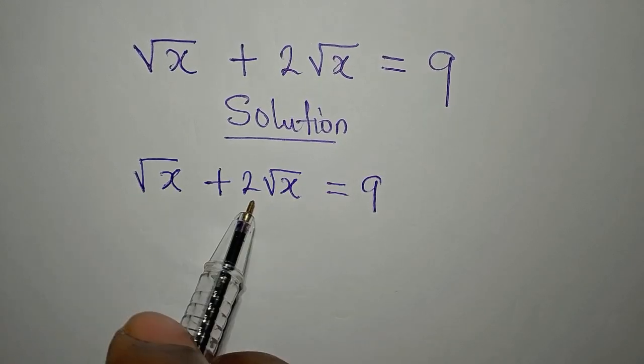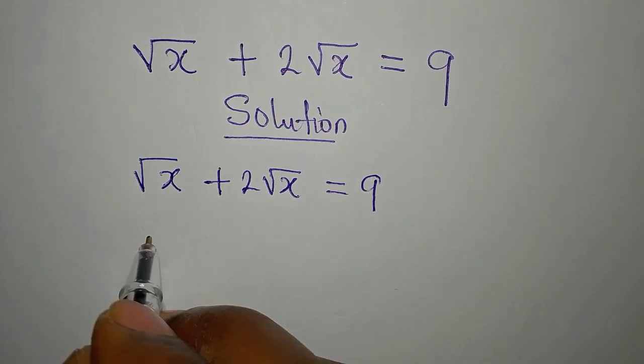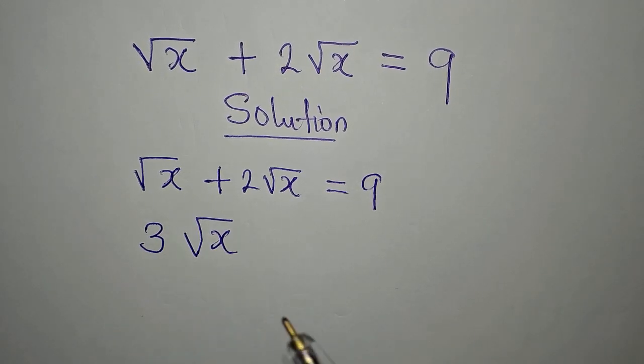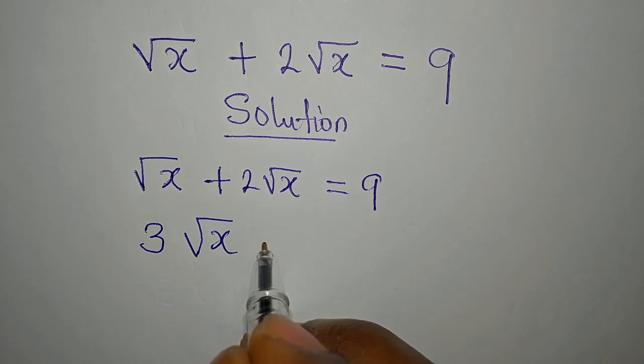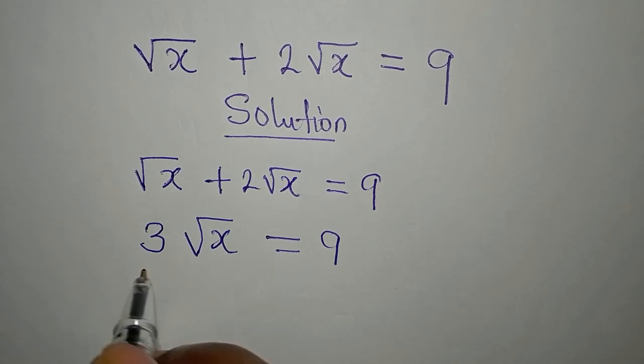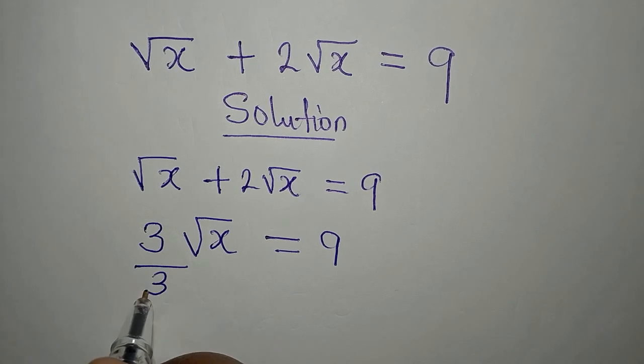So we can add whatever that we are having, so we have 3 square root of x. This is what we have and it will be equal to 9. Now what happens is this will be divided by 3.